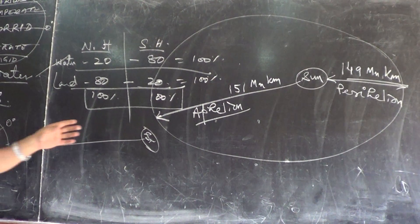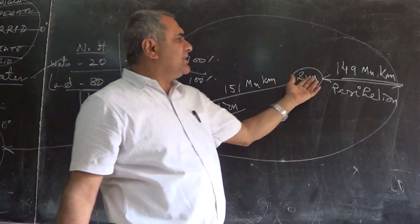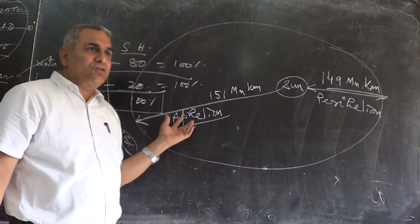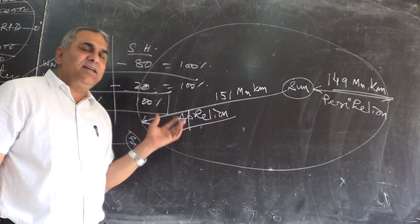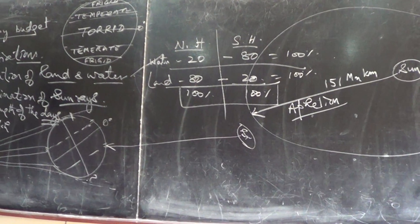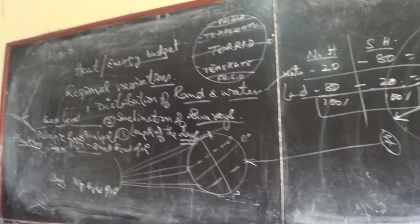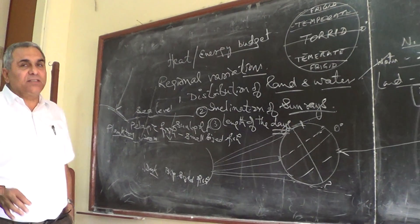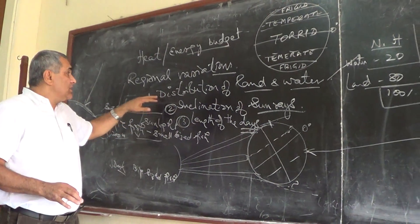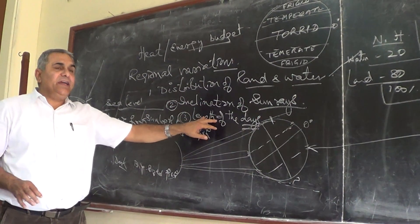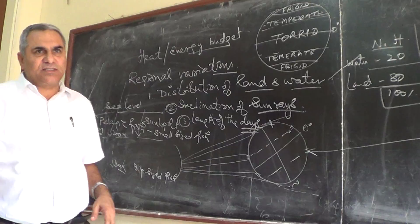In the perihelion position, when the sun's rays hit the earth more directly, insolation would be more intense. At aphelion, insolation would be less intense. These are a few factors influencing heat distribution on earth. I gave you four basic parameters: distribution of land and water, inclination of sun, length of the day, and position of the sun - perihelion and aphelion.